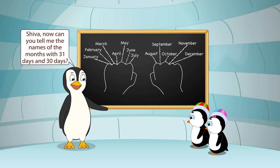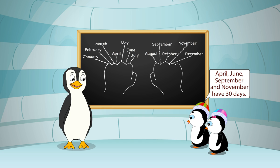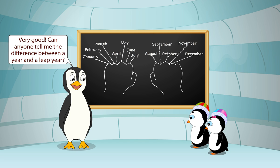Shiva, now can you tell me the names of the months with 31 days and 30 days? January, March, May, July, August, October and December have 31 days. April, June, September and November have 30 days. Very good.